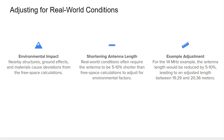When designing antennas in real-world environments, adjustments to the free-space calculations are necessary to account for environmental effects. For instance, the proximity of structures, the height of the antenna, and ground effects can influence its resonance and overall performance. As a result, antennas are often shortened by 5 to 10 percent from their free-space size to function correctly. In our earlier example of a 14 MHz frequency, the initial length of 21.43 meters would need to be reduced by this percentage, bringing the final length somewhere between 19.29 and 20.36 meters.